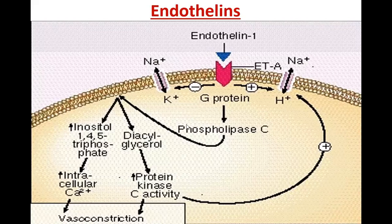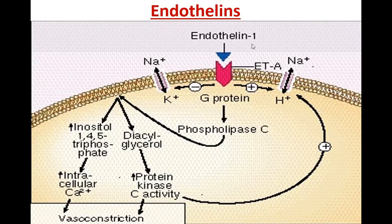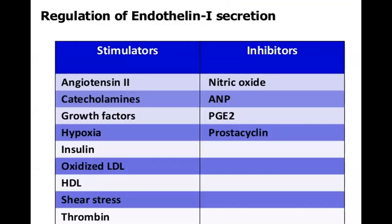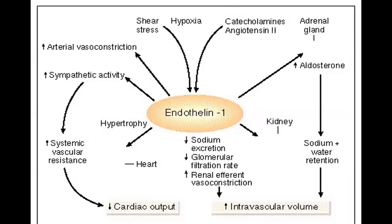Endothelin-1: whenever blood pressure increases or there is endothelial disruption or injury, apart from nitric oxide, the endothelium also produces a substance called endothelin. Endothelin is a potent vasoconstrictor.